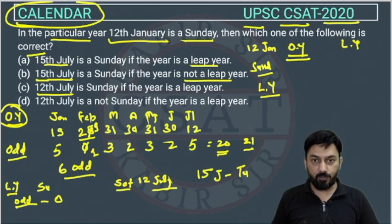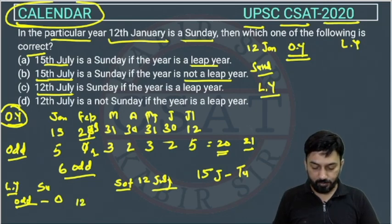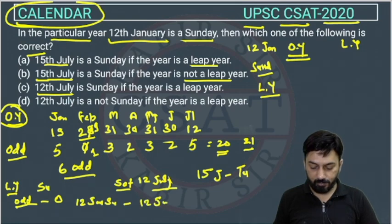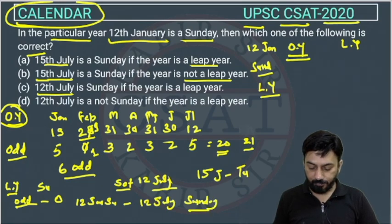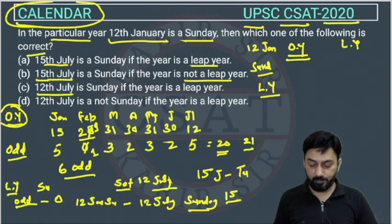Odd day will be 0 in a leap year. If the odd day is 0 and 12th January is Sunday, then on 12th July there will also be Sunday. And then 15th July will be 3 days after it: Sunday → Monday → Tuesday → Wednesday. So 15th July will be Wednesday in a leap year.